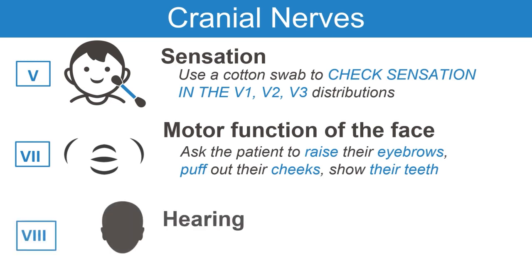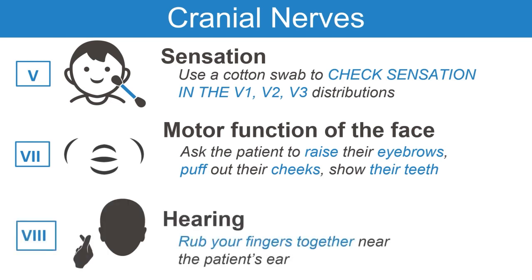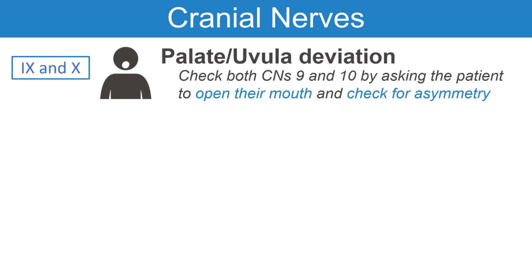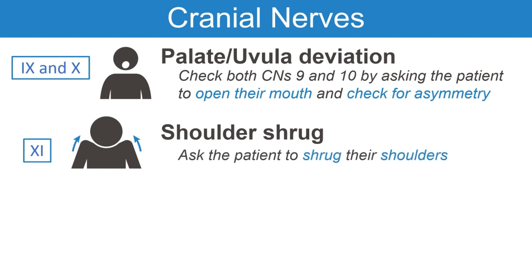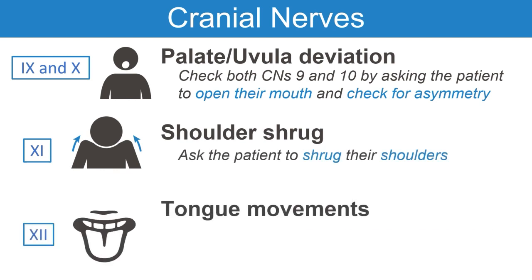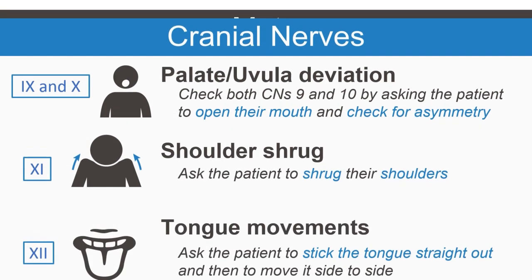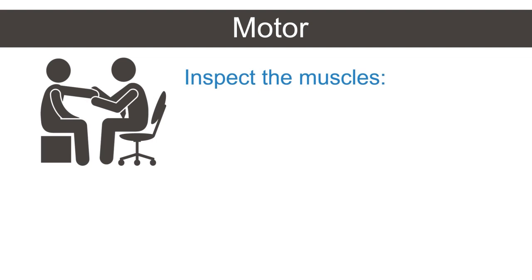Also assess movement of extraocular muscles. Now check sensation and motor function of the face. Rub your fingers together near the patient's ears to assess hearing, then check for palate and uvula deviation. Lastly, test the patient's shoulder shrug and assess tongue movements.